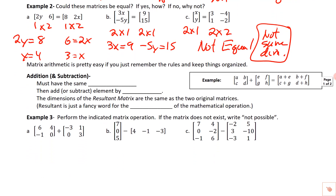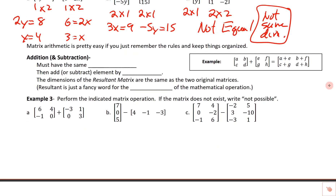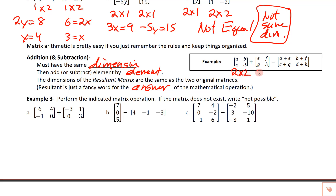For arithmetic — adding and subtracting — the rules are straightforward. The matrices must have the same dimensions, we add or subtract element by element, and the dimensions of the resultant are exactly the same as the dimensions of the two original matrices. The resultant is just a fancy word for the answer we get when we're done.